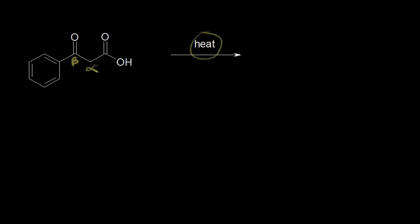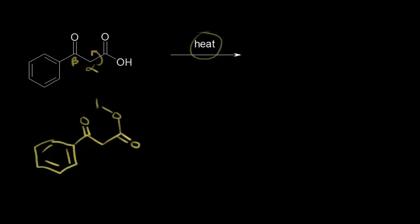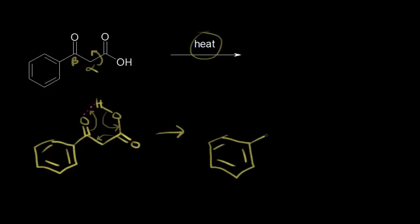If we heat up this molecule, once again thinking about the mechanism, we rotate about that sigma bond and redraw. We have our benzene ring, then the carbonyl, then our carbonyl going off to the right and the OH over here on the left. Thinking about our mechanism — again it's a cyclic mechanism — this oxygen is going to bond to this proton, so these electrons move into here, these electrons move into here, and these electrons move into here. Drawing what happens after moving all those electrons: we have our benzene ring bonded to an oxygen, the oxygen bonded to the proton, a double bond right in here, and we also form CO2.